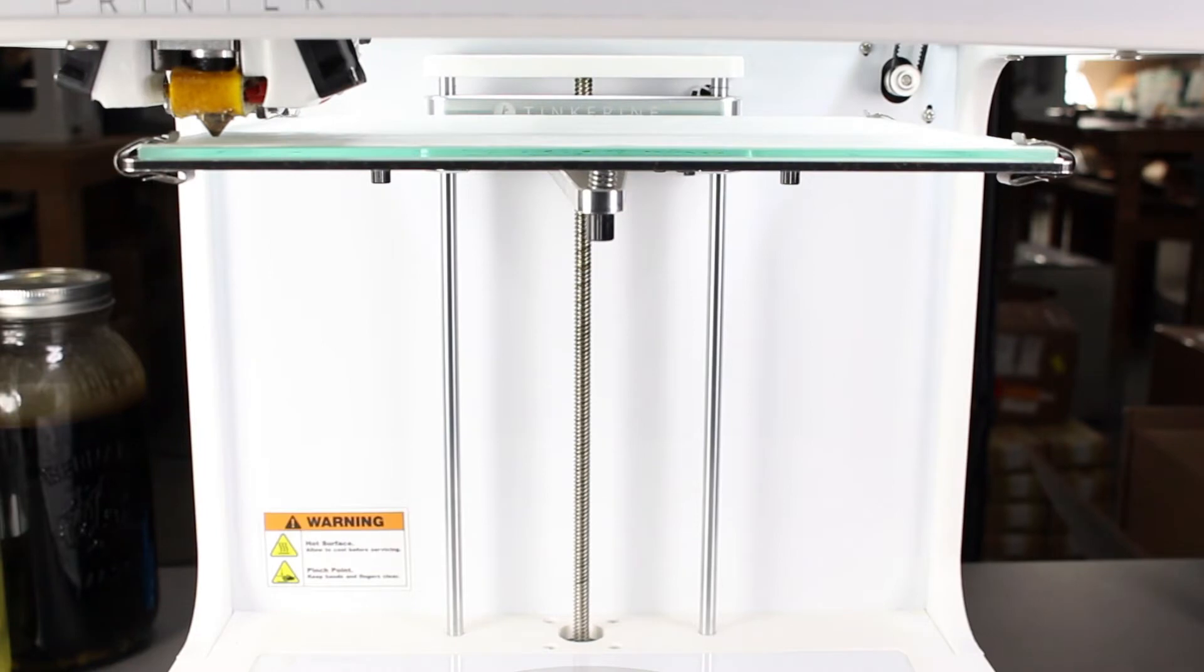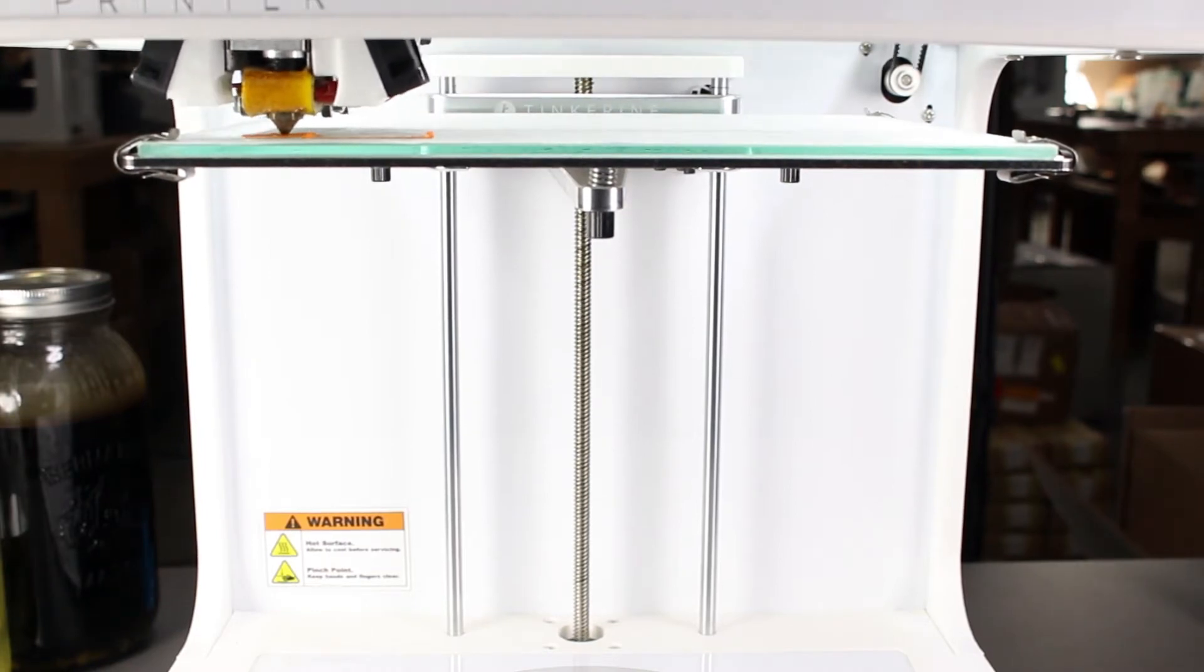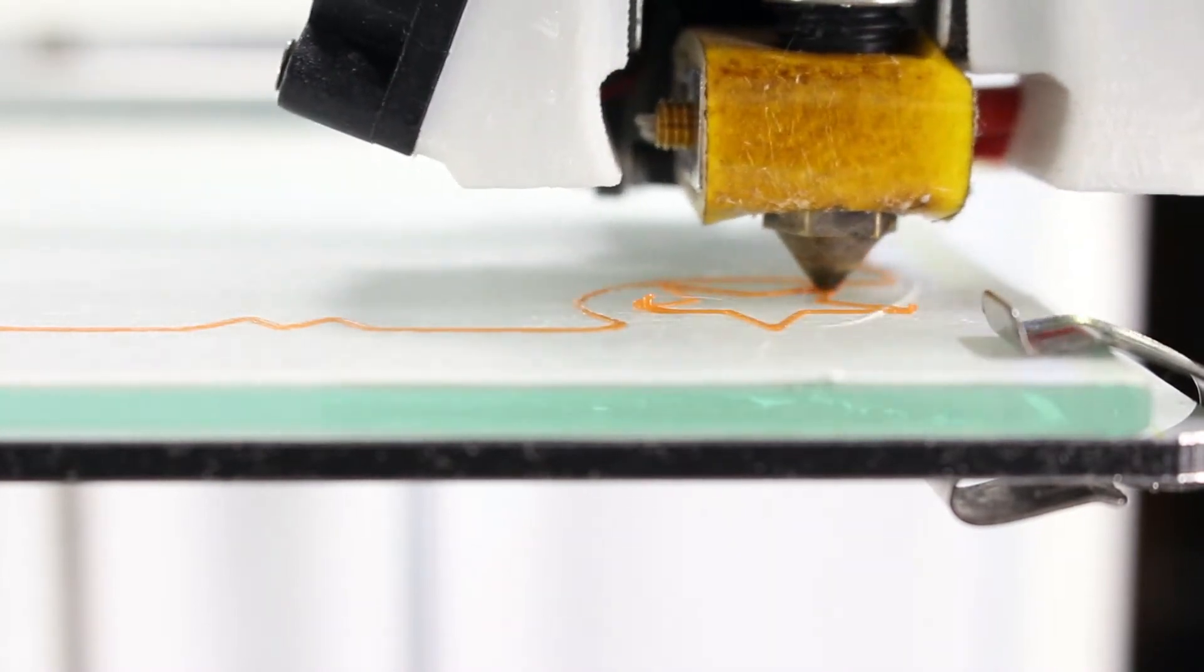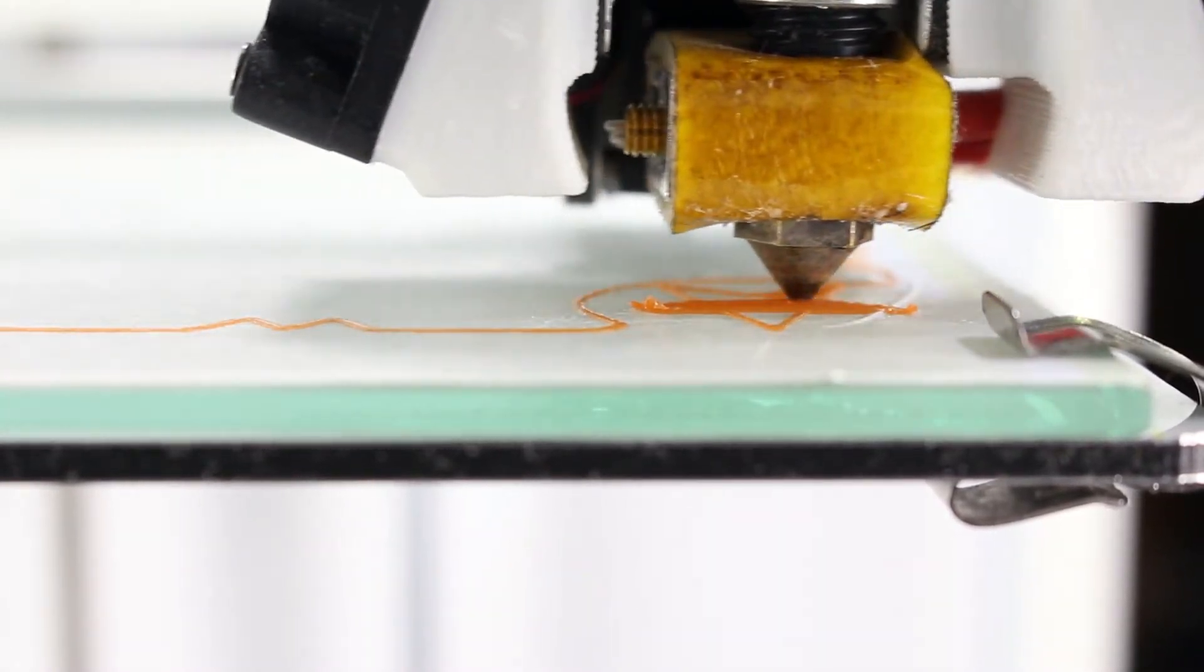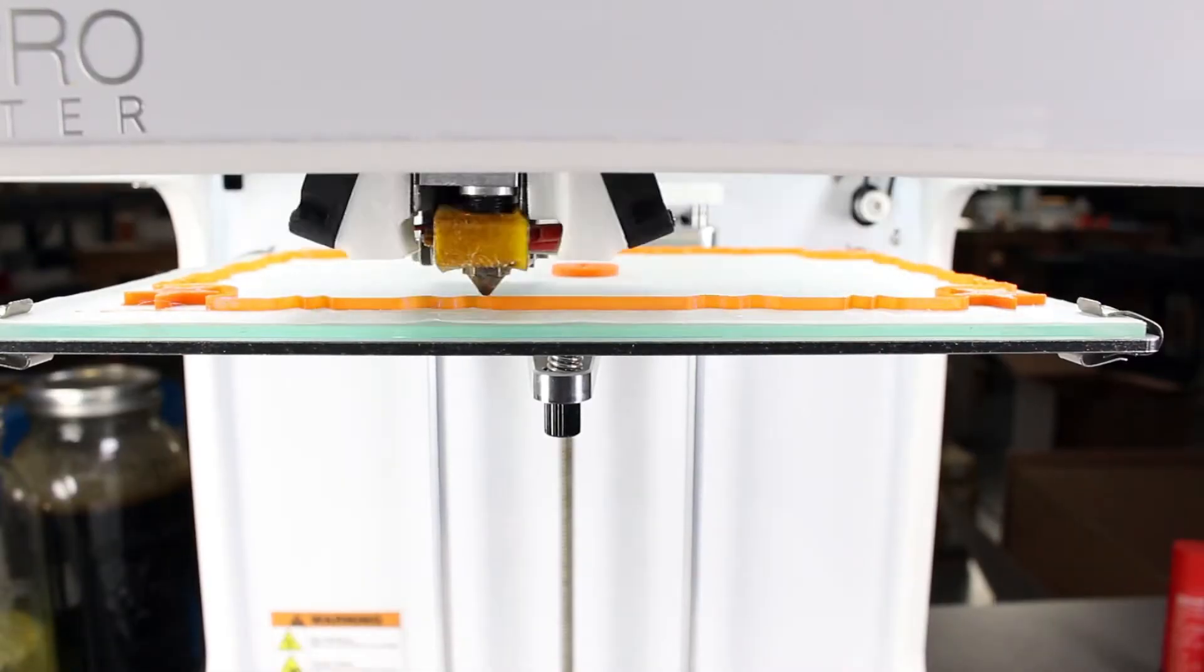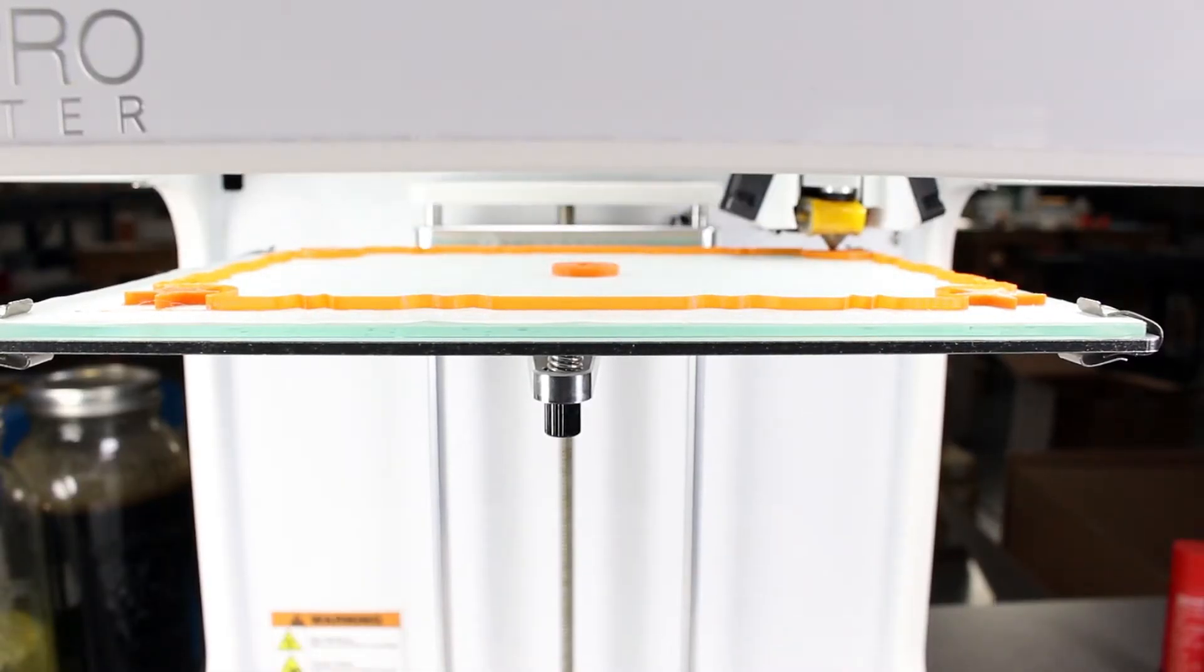We'll start off with the perimeter print. It looks like it's sticking relatively well for the perimeter. Nothing is peeling so far, none of the four corners are peeling, the center is sticking on well. Pretty good so far.